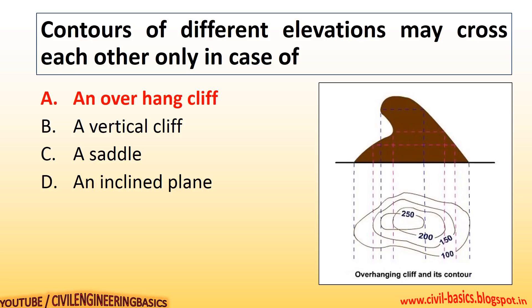Contours of different elevations may cross each other only in the case of an overhang cliff. You can see the contour lines of the overhang cliff.